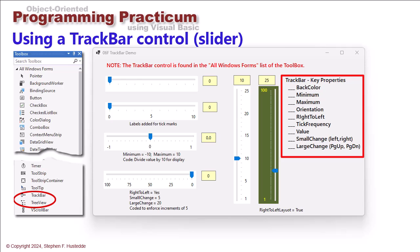So the track bar only does integers and there's no setting for the increments. It always does increments of one. The orientation can be horizontal or vertical.